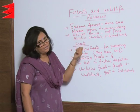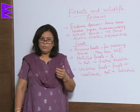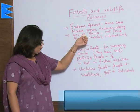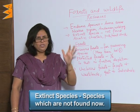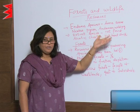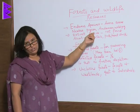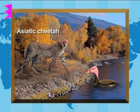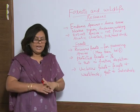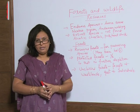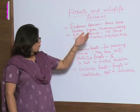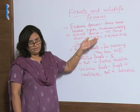The next category is extinct species — we will never be able to see them. 'Extinct' means something which is not there anymore. The most immediate example most people recall is the dinosaurs. Extinct species are those no longer found today. Examples include the Asiatic cheetah and the pink-headed duck. The reasons for species becoming vulnerable, endangered, or extinct are the same — it depends on how severely the factors affect them.